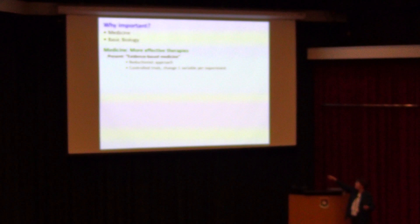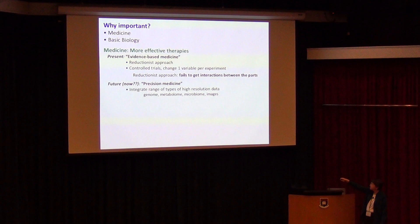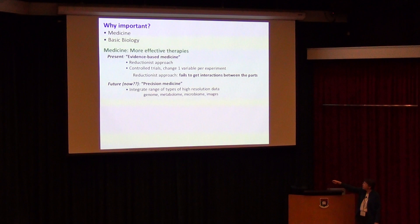Why would this type of thing be important? The two reasons are medicine and basic biology. In medicine there's a lot of desire to make more effective therapies. The present of medicine is evidence-based medicine, where historically we've taken reductionist approaches with controlled trials, changing one variable at a time per experiment. But this reductionist approach fails to capture the interactions between the parts. The future — really being developed now — is what people heard about in the talk yesterday about cancer: precision medicine.